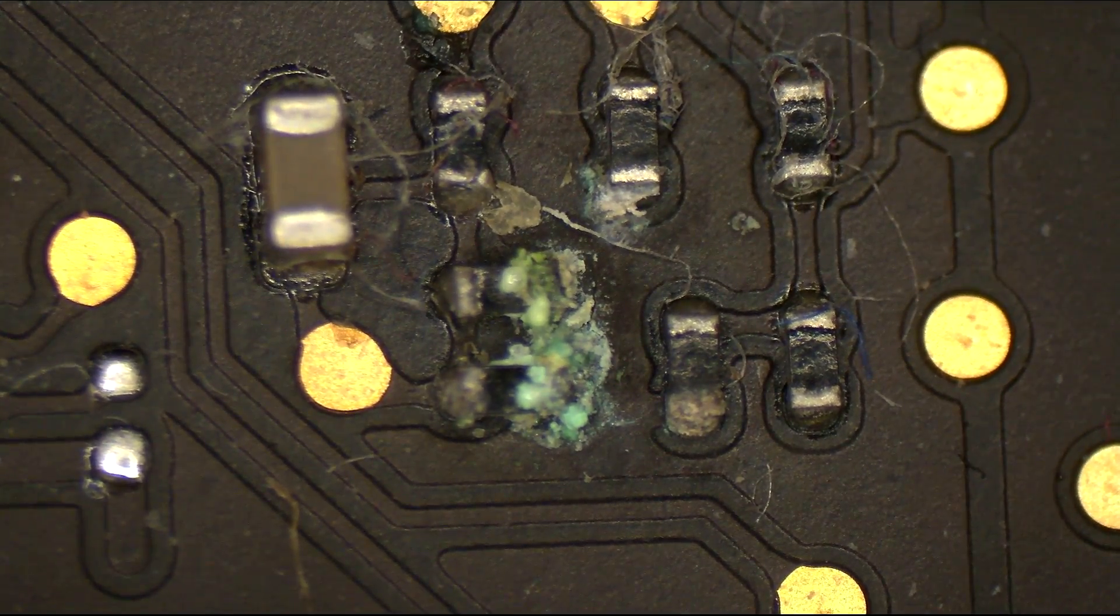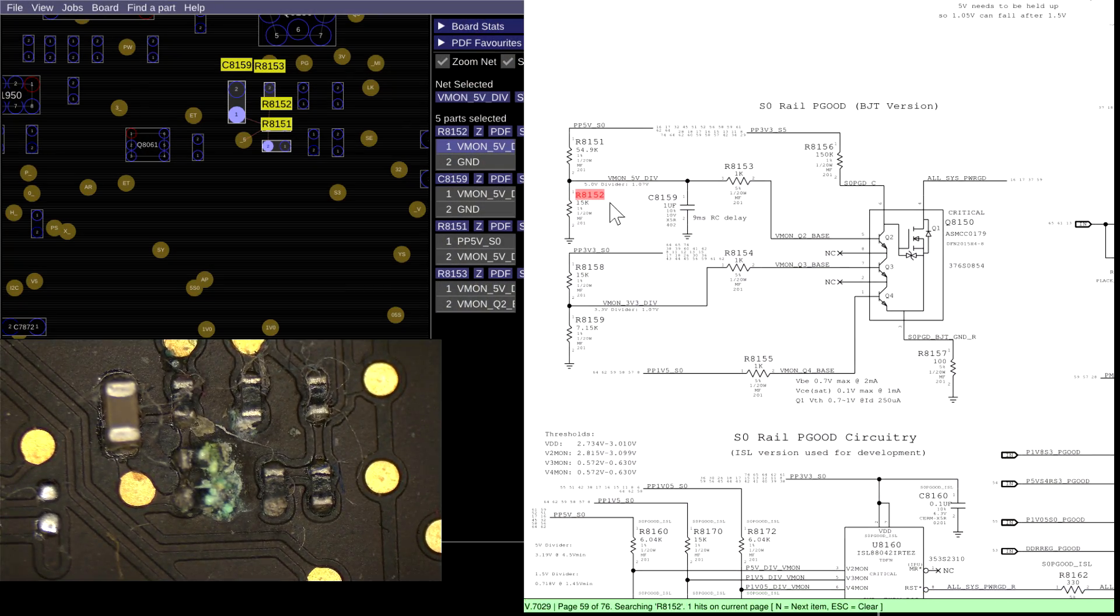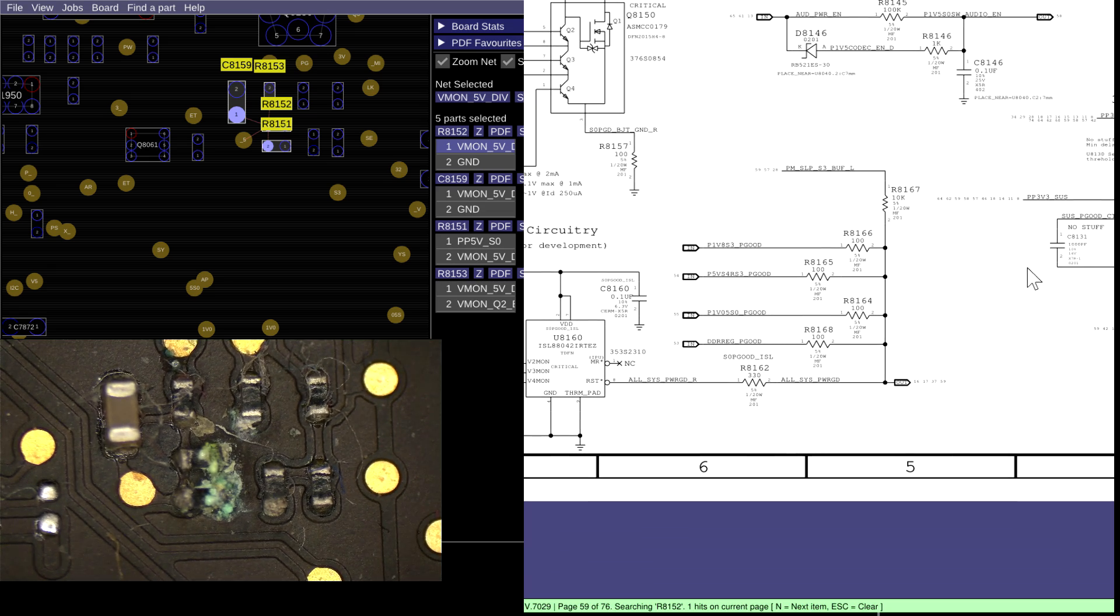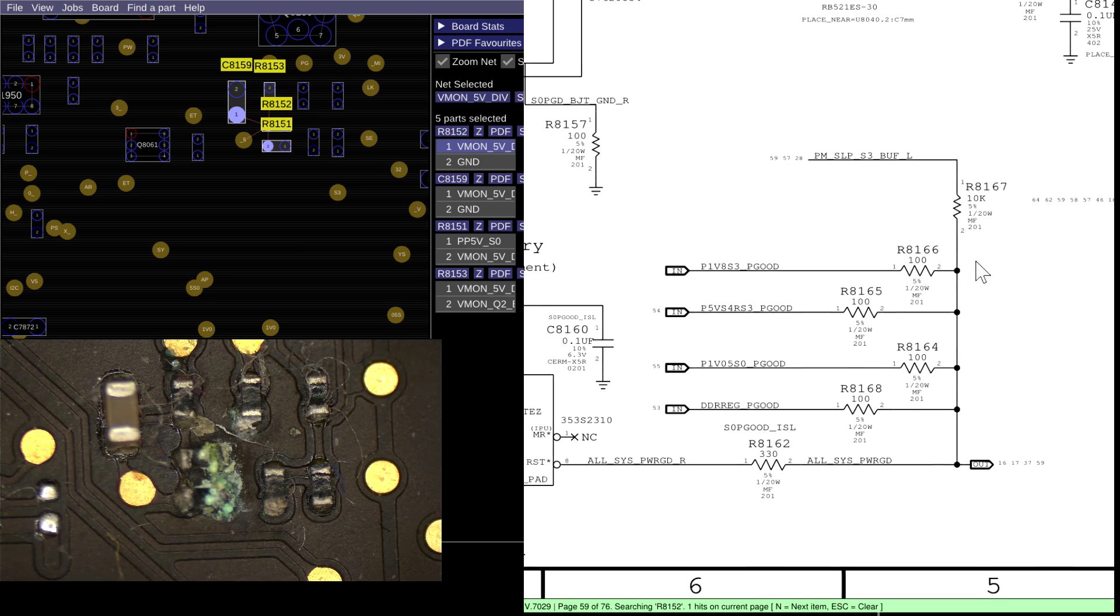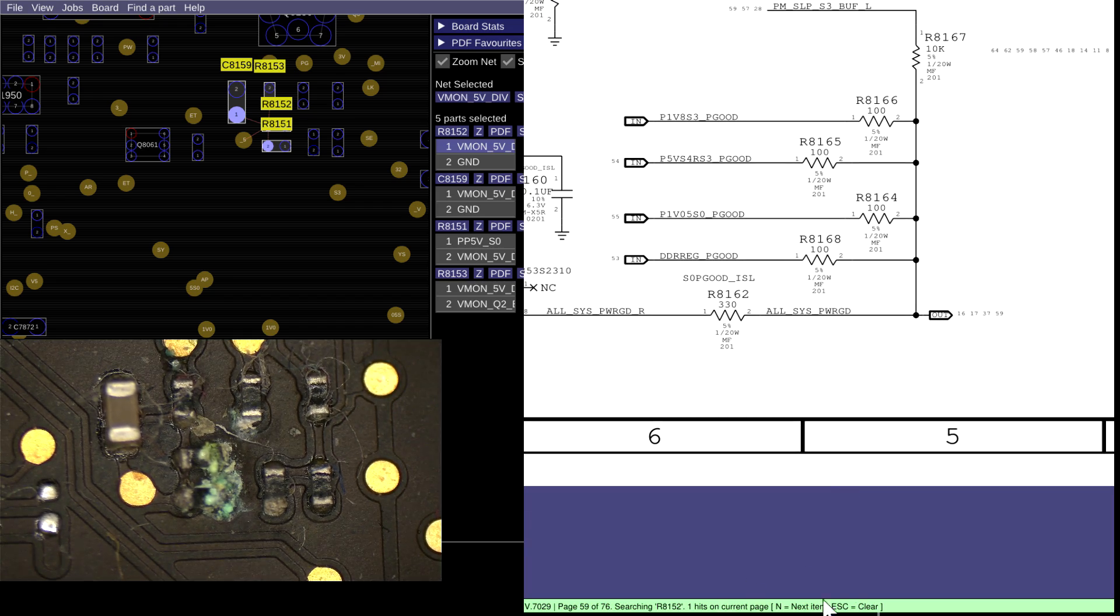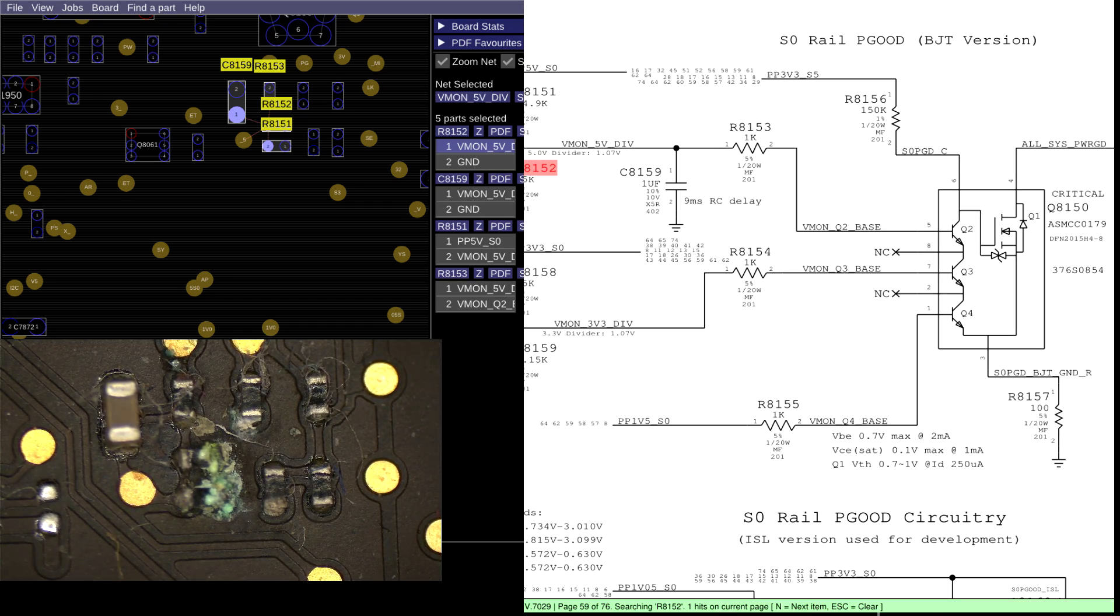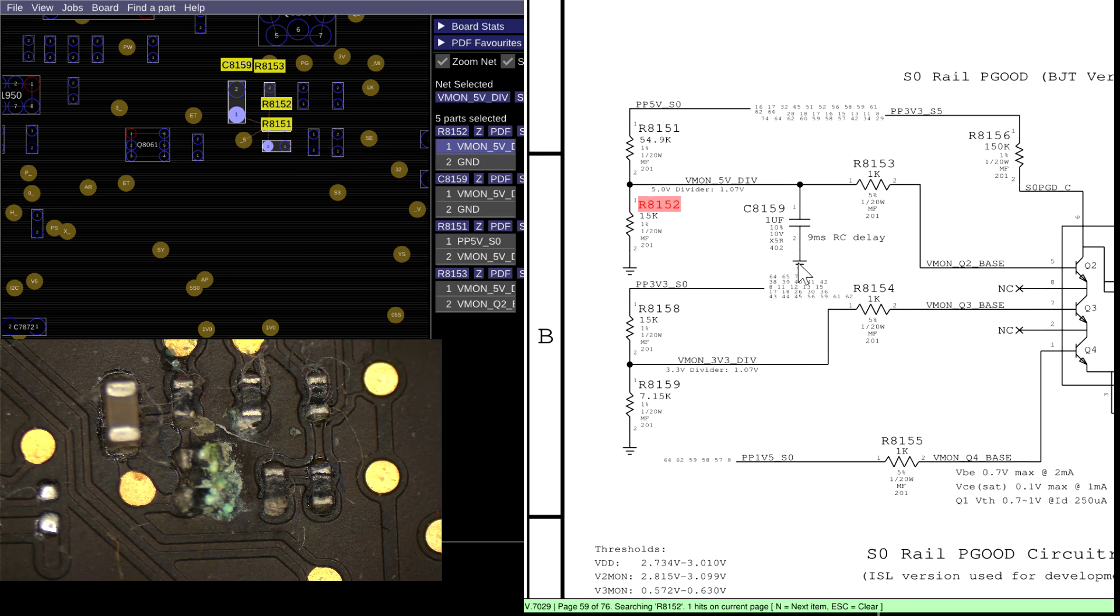And I'm going to take a wild guess that that is around the all sys power good circuit. This is going to allow all sys power good to be created if you have PP5VSO, PP3V3SO, PP1V5SO. And then you're also going to need this pull-up resistor over here, which if PM sleep S3L is present, which is required to get out of an S3 state and up into an SO state, if you have P1V8S3 P good, P5VS4 RS3 P good, P1V05SO power good, DDR power good, then you'll get all sys power good. And we have R8151 and R8152 corroded.